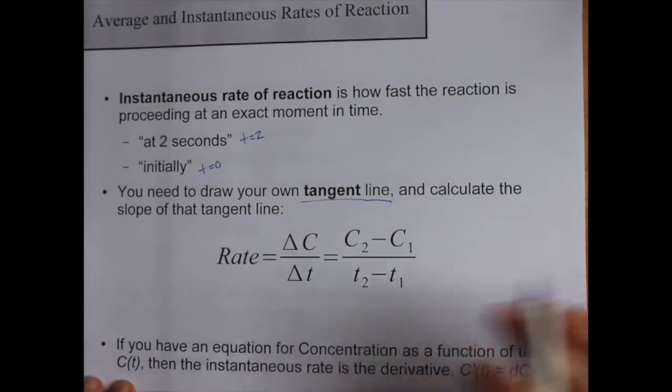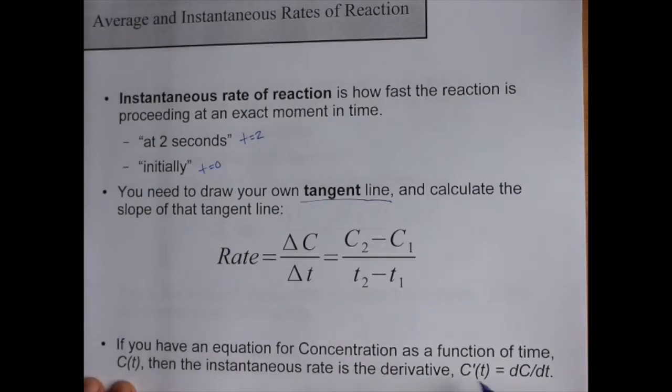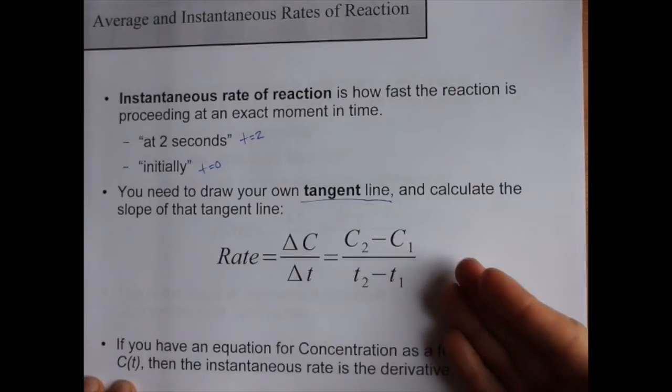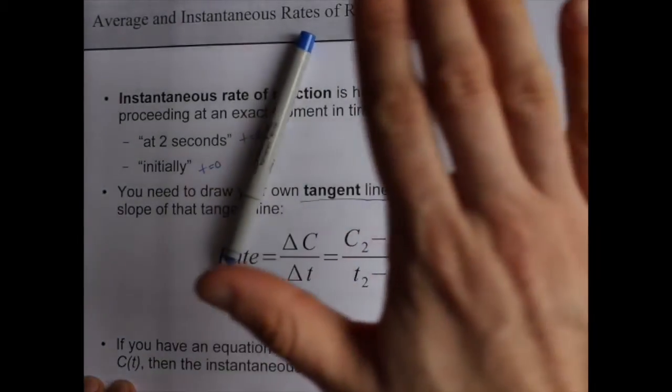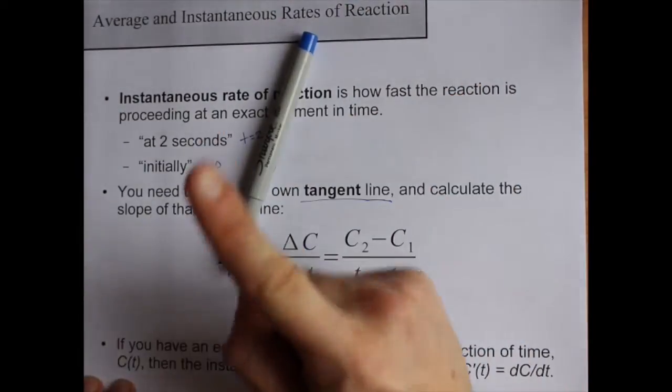And finally, if you know calculus, you could always just take the derivative of concentration with respect to time. That will give you the instantaneous rate. But I'm assuming you guys may not have that calculus background, which is why I did it the long way. Best of luck.